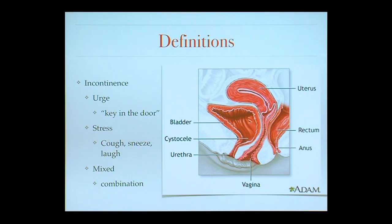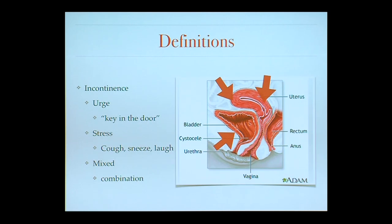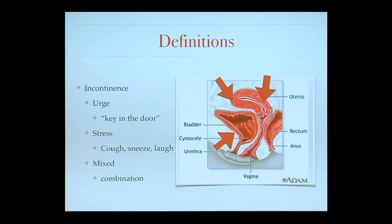There are two different types of incontinence. The first is urge incontinence, sometimes described as key-in-the-door incontinence, because patients will describe that as they're walking to the bathroom — rushing to get home, putting the key in the door, about to reach the bathroom — that's when they leak. Usually the muscle around the bladder contracts abnormally: it's a detrusor muscle contraction that causes that leakage.